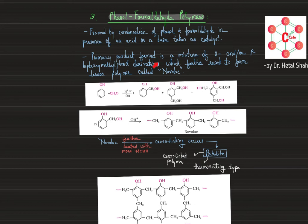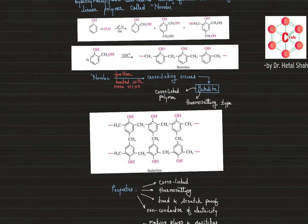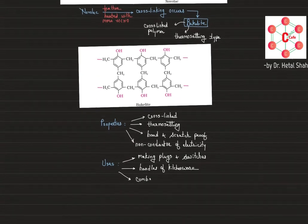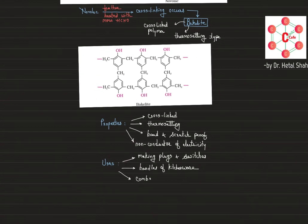To summarize: phenol and formaldehyde polymers form Novolac first, which is a linear polymer. Novolac is then cross-linked to get bakelite. Bakelite is a cross-linked thermosetting polymer — very hard, scratch-proof, and a bad conductor of electricity — used in making electrical switches, plugs, handles of kitchenware, and combs.